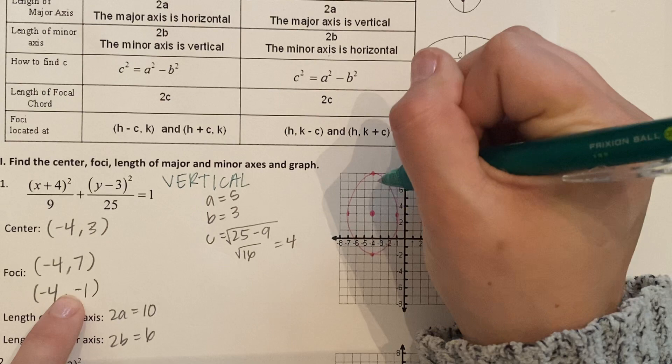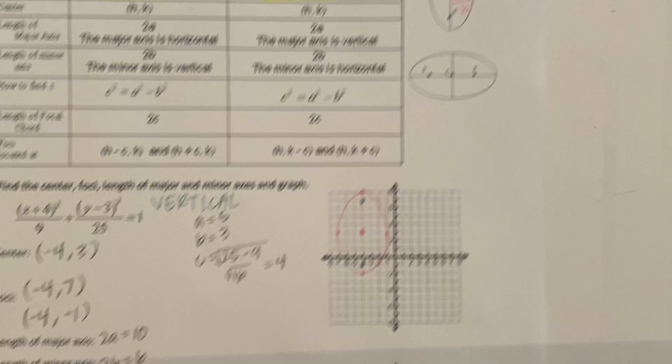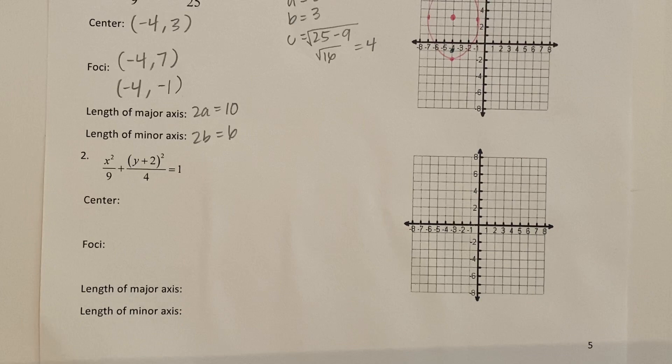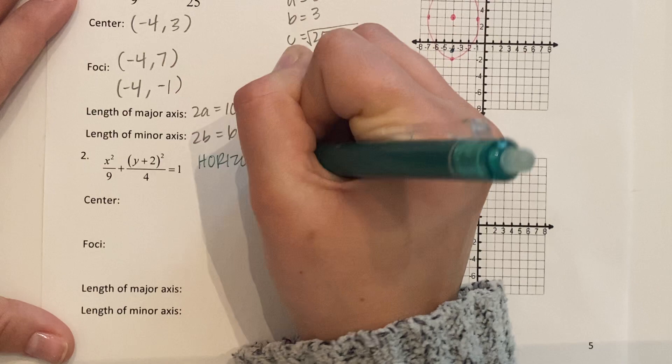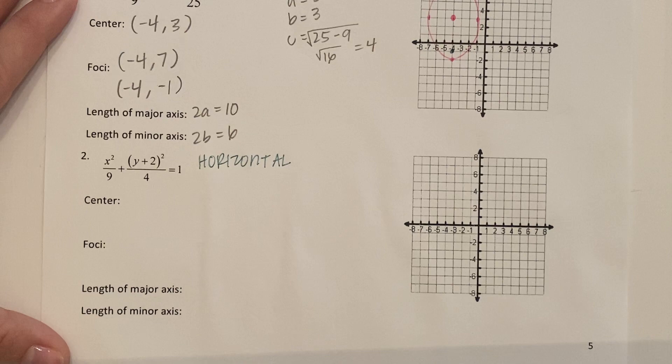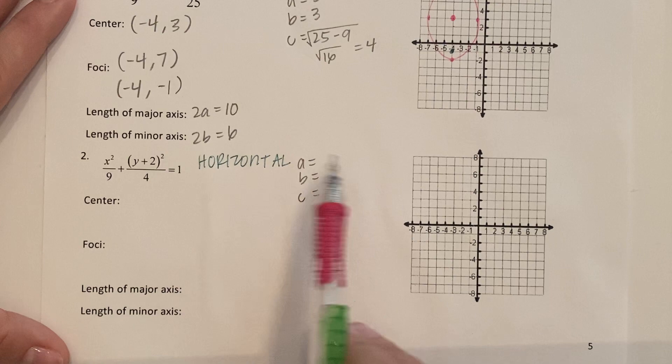Hey, let's do it again. First thing we're going to decide, horizontal or vertical. Where's the bigger number? Under X. That means horizontal. Let's solve for A, B, and C. Just makes things easier in the long run when we go ahead and do this first. Now remember, A is the bigger number. A is not 9. This is already squared. So A is 3. B is 2. Since 3 squared is 9 and 2 squared is 4.